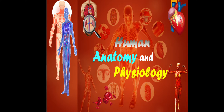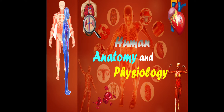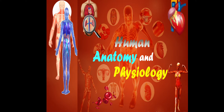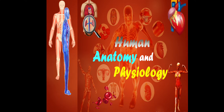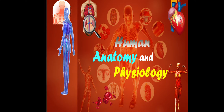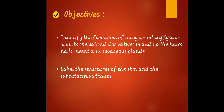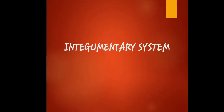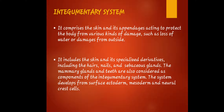This is our discussion for human anatomy and physiology. Before we go on to our topic, let's know first the general objectives of this lesson: identify the function of the integumentary system and its specialized derivatives including the hair, nails, sweat and sebaceous glands, and label the structure of the skin and subcutaneous tissues. Today our lesson would be the integumentary system.